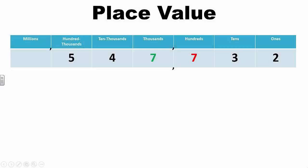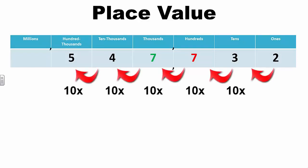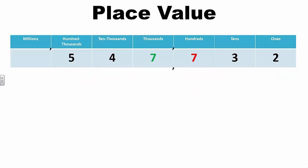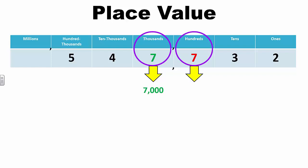This standard calls for students to reason about the magnitude of numbers. In fourth grade, students recognize that in a multi-digit whole number, a digit in any one place represents 10 times what it represents in the place to its right. For example, in the number 547,732, students should recognize that the value of the seven in the thousands place is 7,000 and the value of the seven in the hundreds place is 700. 700 times 10 equals 7,000, so the value of the seven in the thousands place is 10 times greater than the seven in the hundreds place.